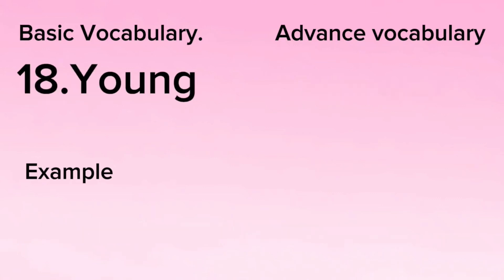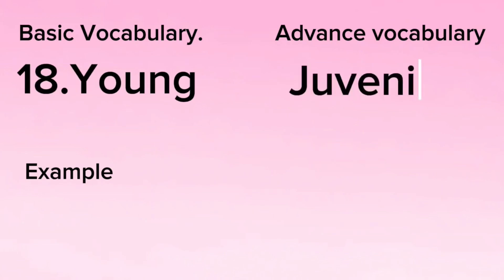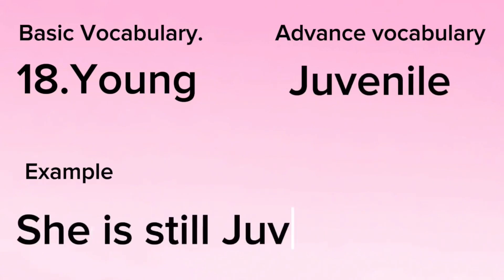Number 18. Young — Juvenile. For example, she is still juvenile.